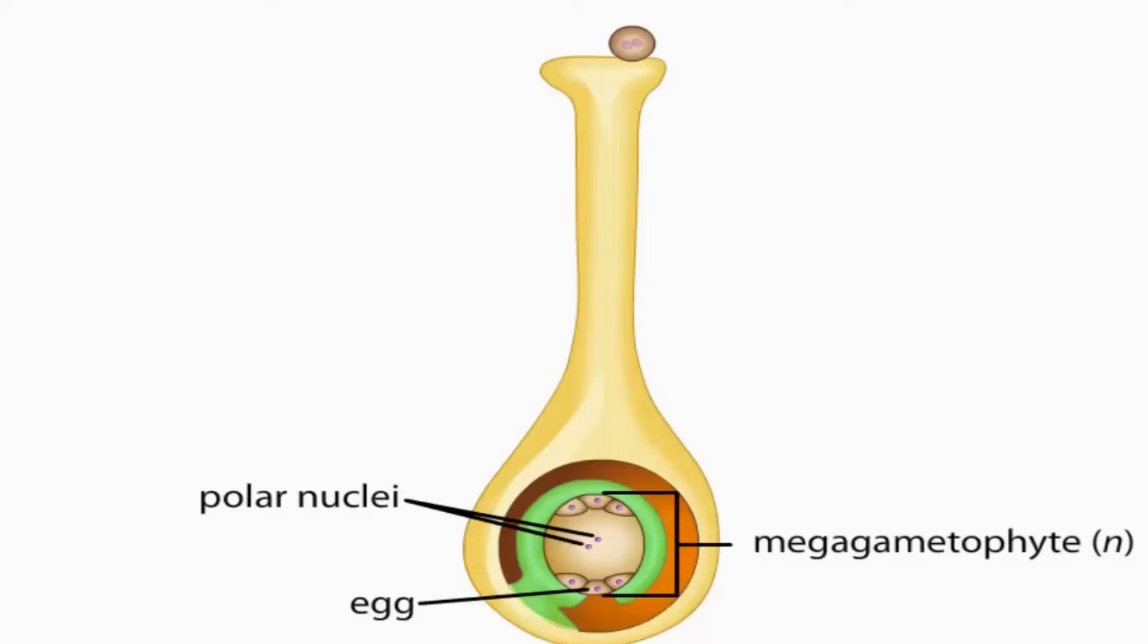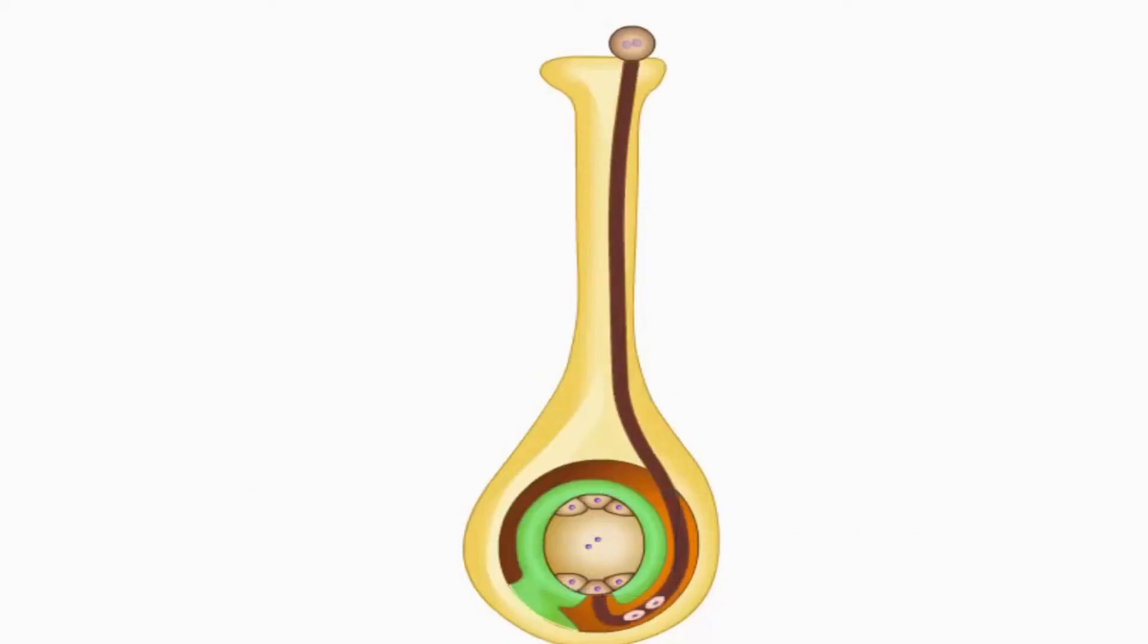The pollen grain pollinates the female. When the pollen grain reaches the stigma, it germinates into a tube called the pollen tube. Two sperms travel to the micropyle.